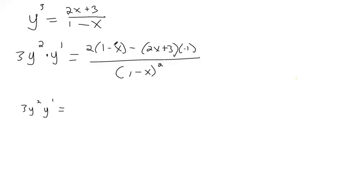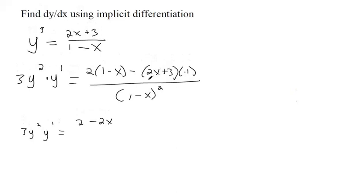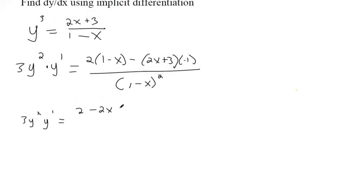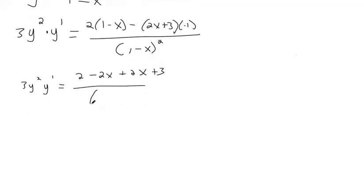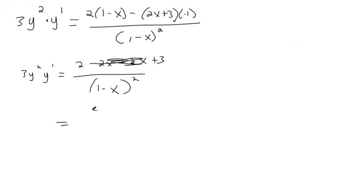That's 2 minus 2x here. Just distributed. That's a negative 1 times everything. So that's a negative 2x minus 3. So that's going to now be a positive 2x plus 3 because a negative and a negative make a positive. And then minus 2x plus 2x, those cancel out. 2 plus 3, I think that's 5.